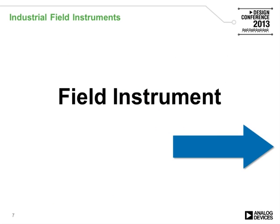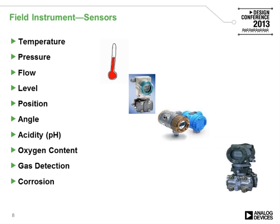So discussing those field instruments in particular — what do field instruments measure? Probably the most common by far is temperature, but they also often measure pressure, flow, level, position, and a number of other variables. If you can measure it, there could be a field transmitter to measure that parameter.